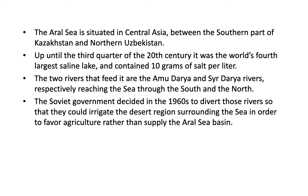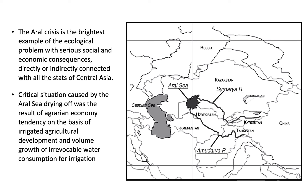It was fed by two rivers, the Amudara and the Sirdara rivers, that respectively reached the sea through the north and southern directions. In the 1960s, the Soviet Union decided to divert those rivers for irrigation in other areas surrounding the Aral Sea, favoring agricultural and economic production rather than supplying water to the Aral Sea basin. The result is a huge change in the Aral Sea area, with impacts on both the water issues and the surrounding ecosystem services it provides, particularly in terms of fish production, which was a basis for the economy in those societies surrounding the Aral Sea.